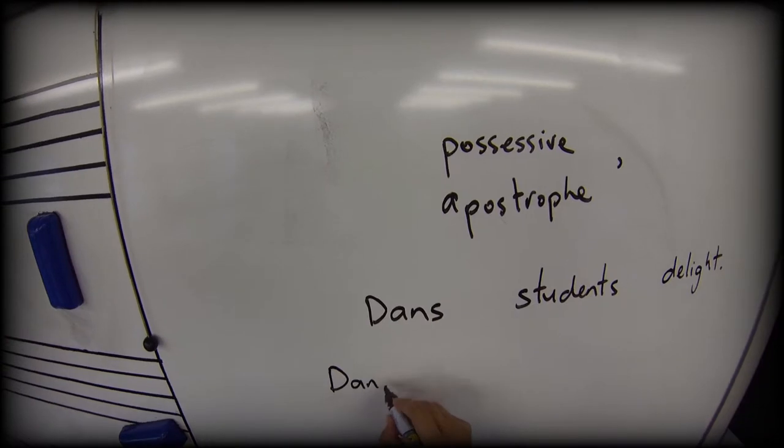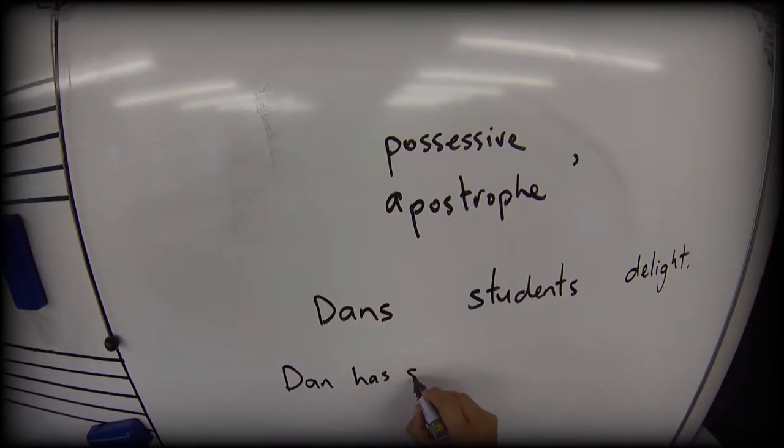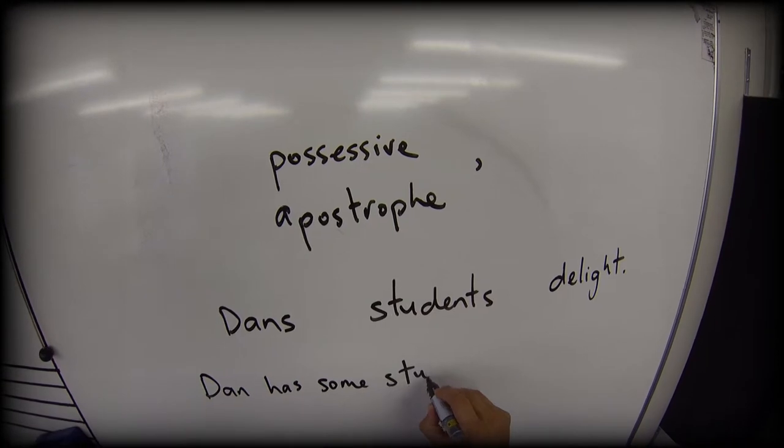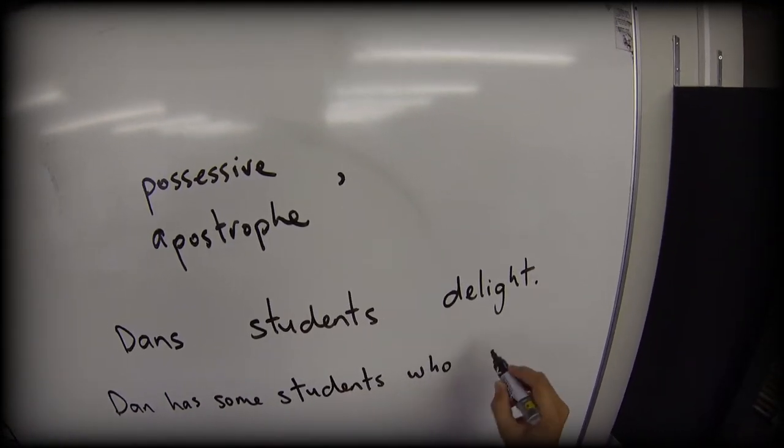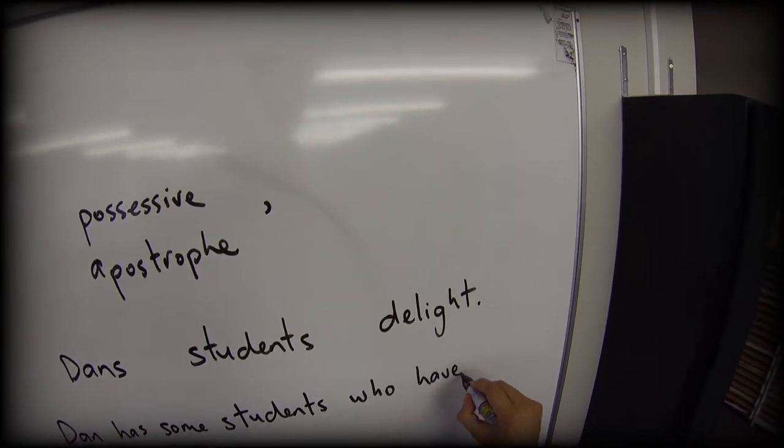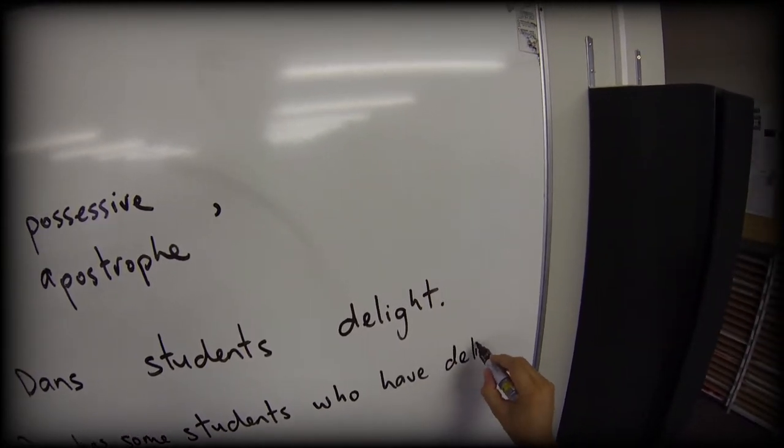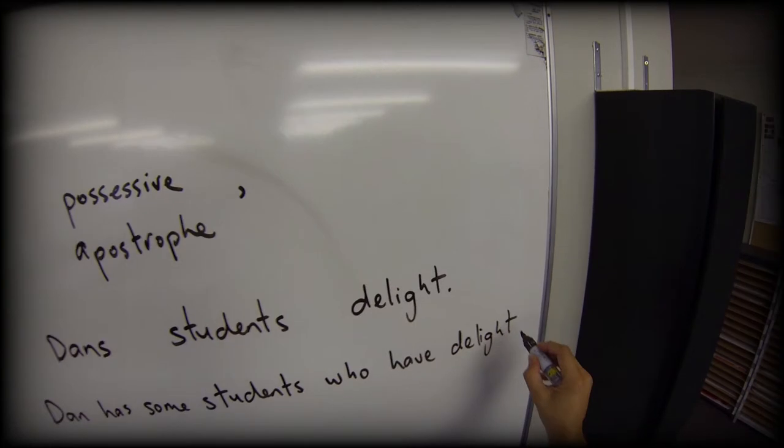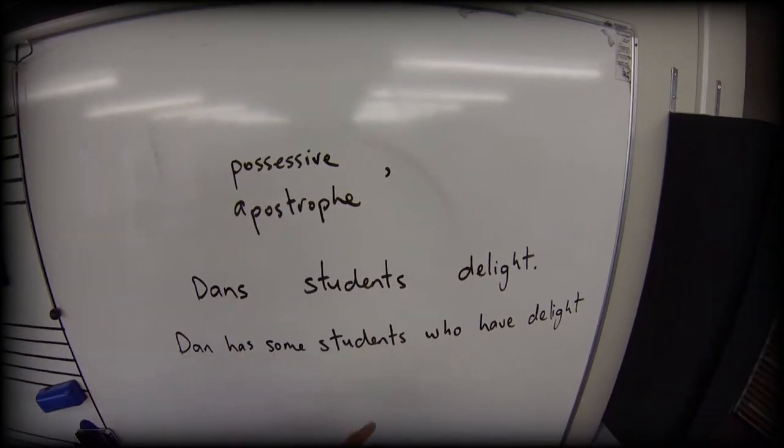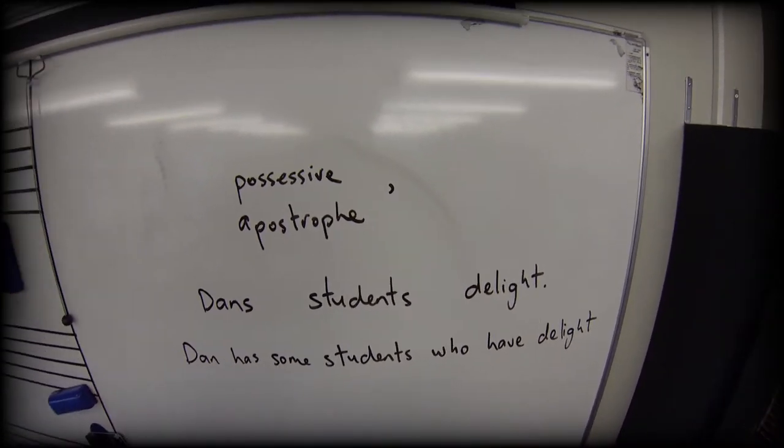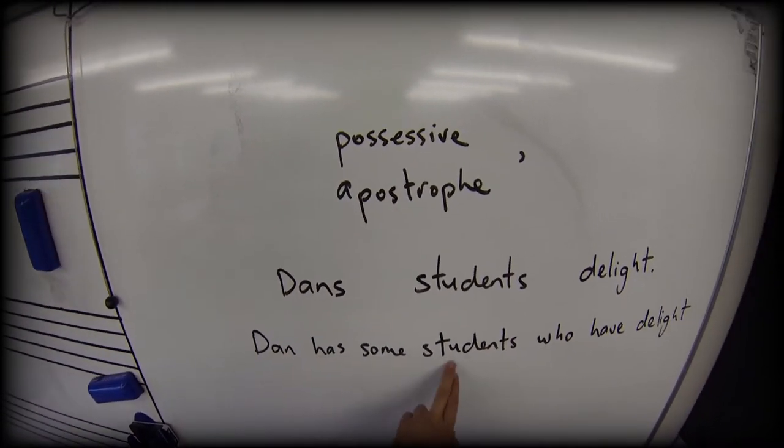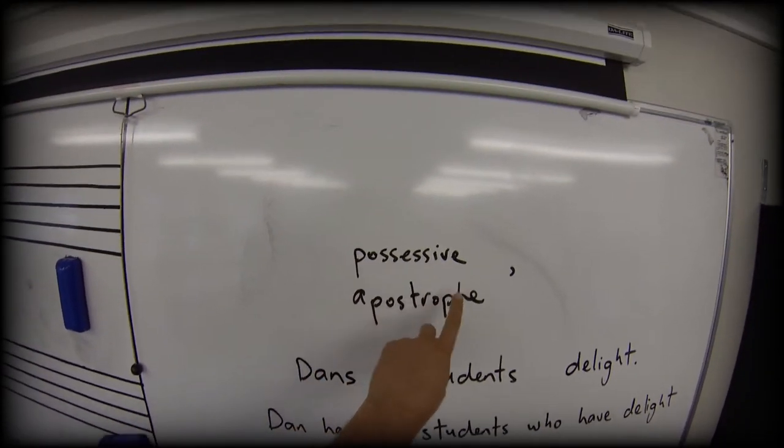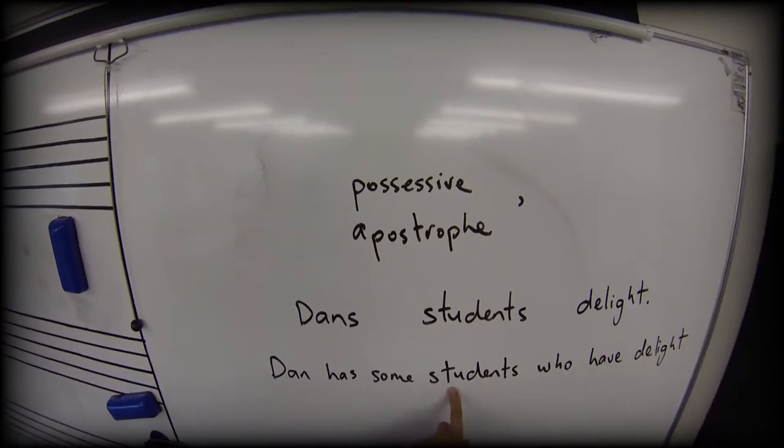So Dan has some students who, in turn, have a sense of delight. Dan has some students who have delight. Now, because Dan has some students, that's where the possessive idea comes in. Dan possesses them. Sorry, Dan owns you at this point, at least grammatically.